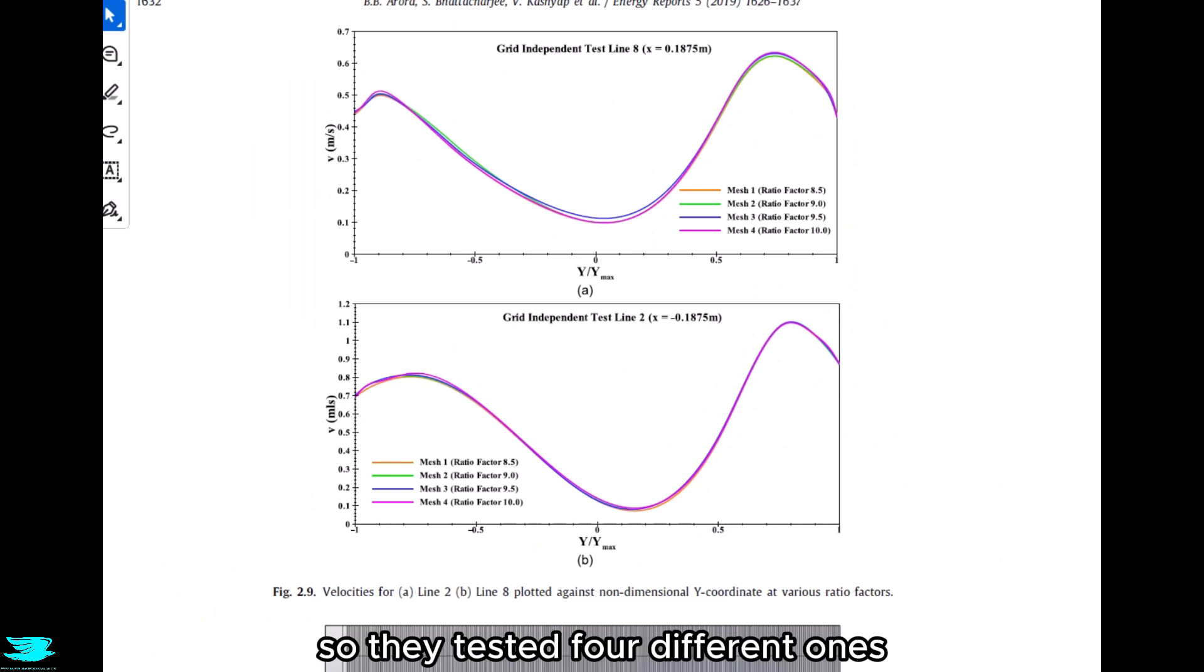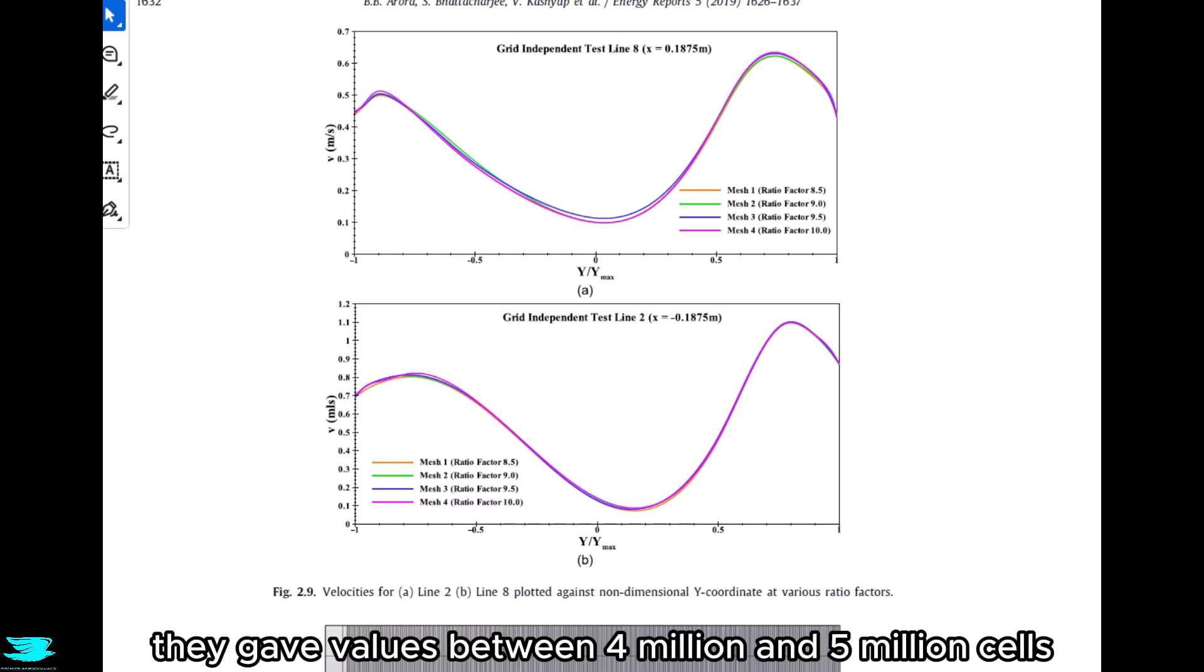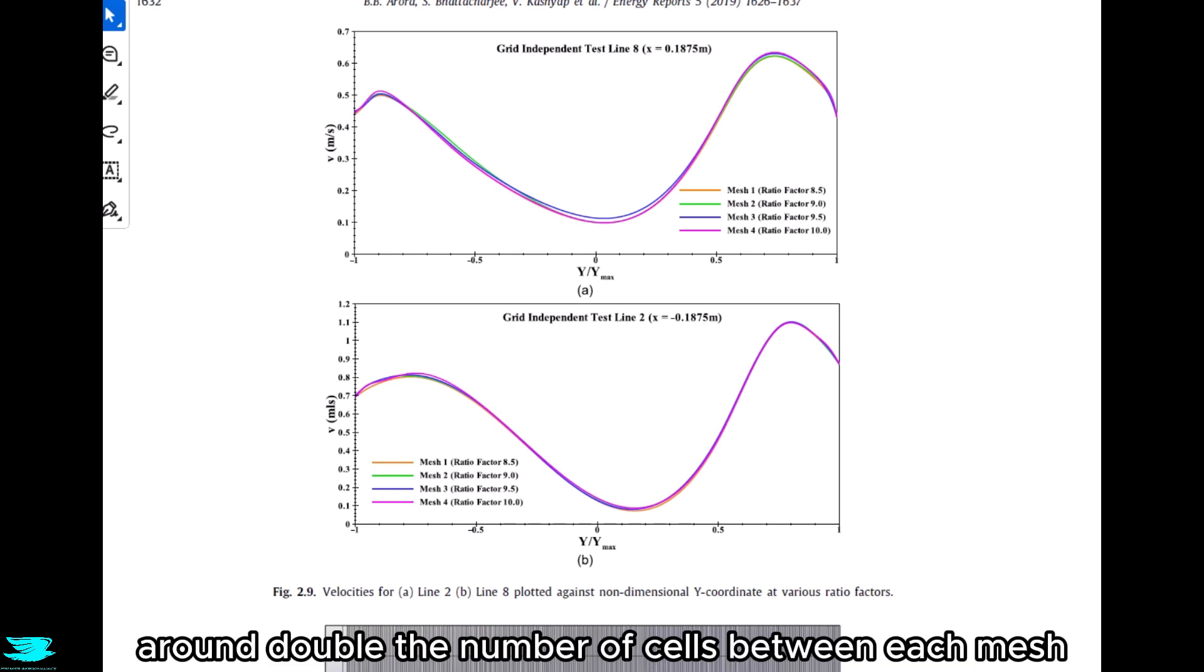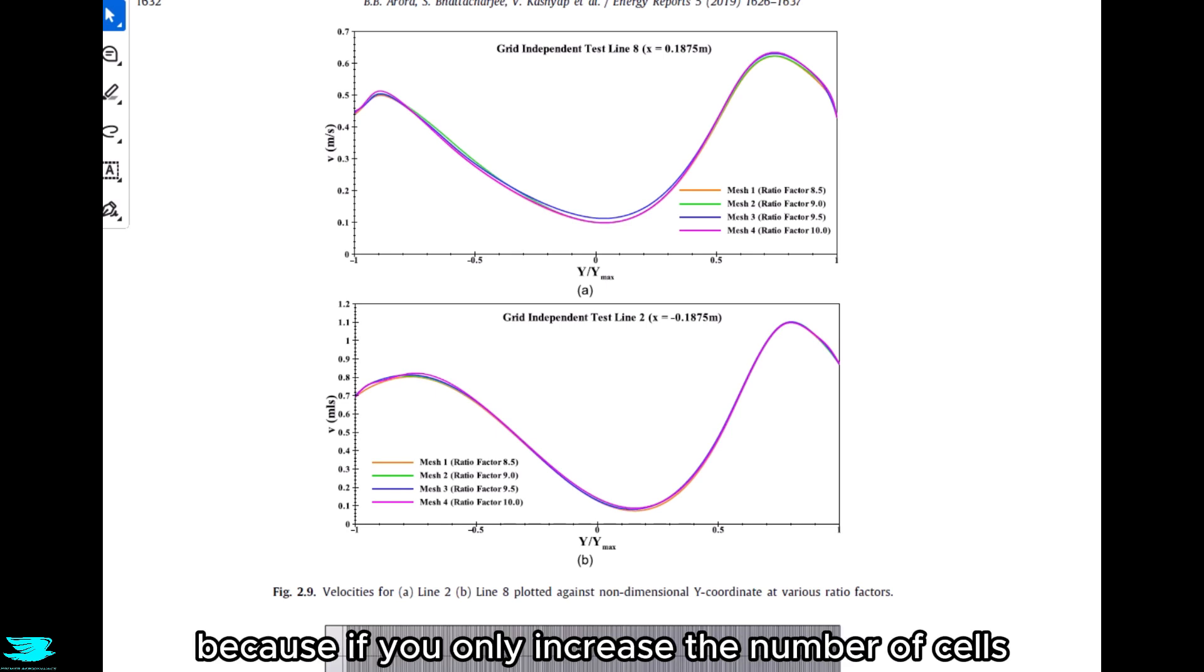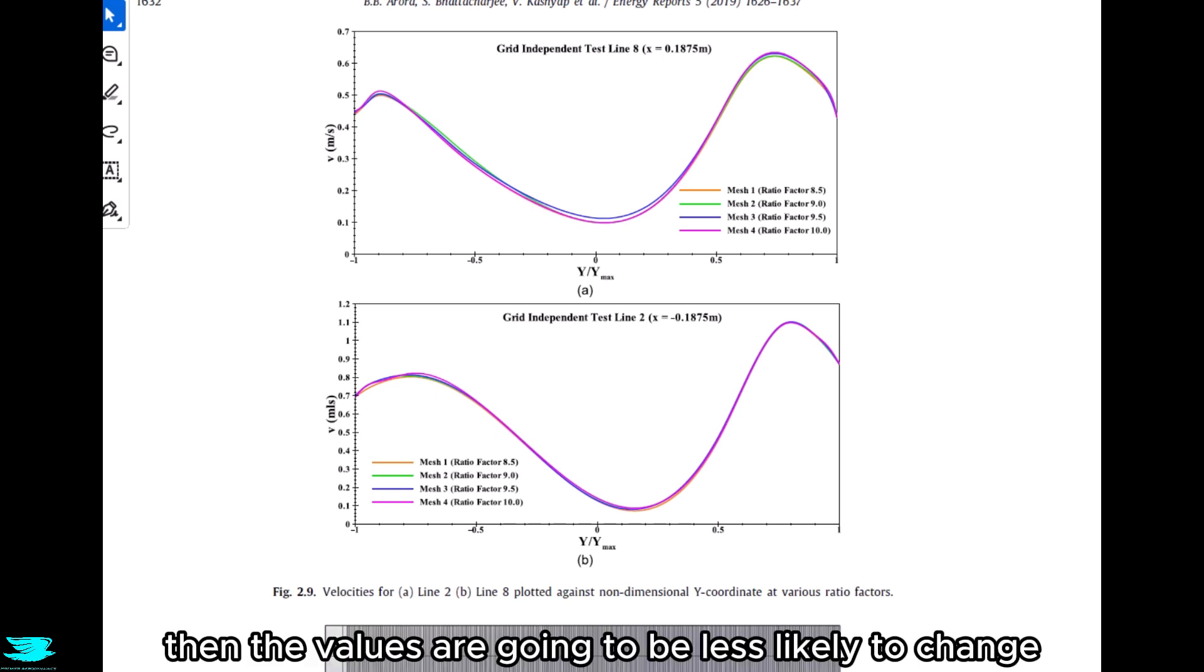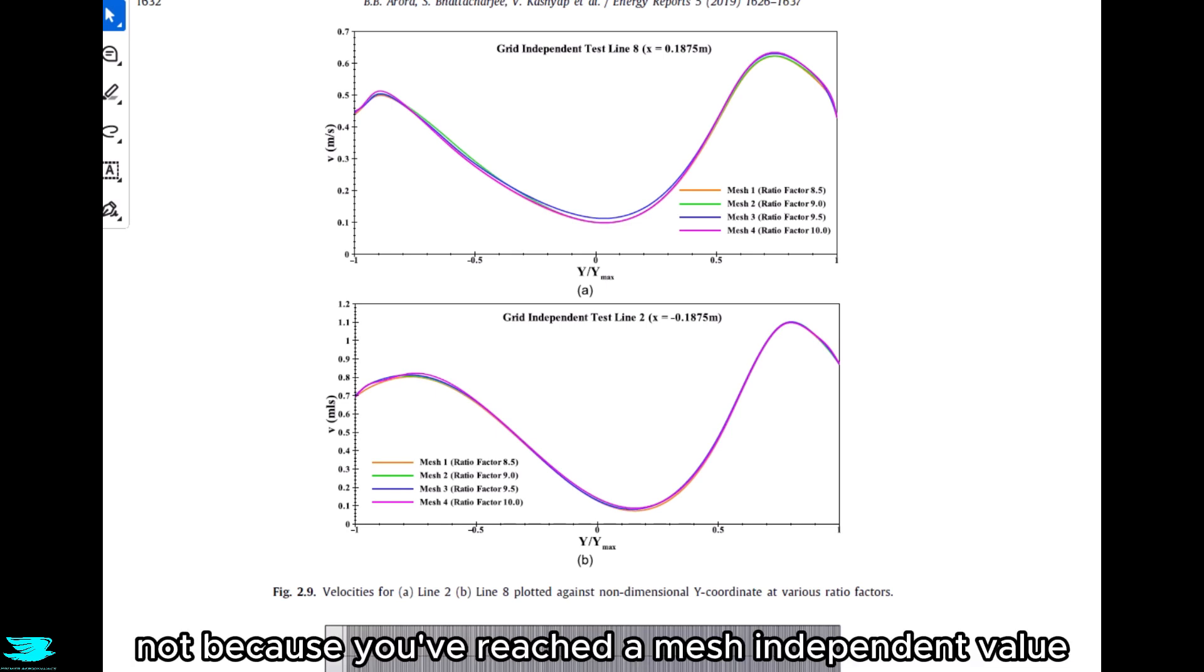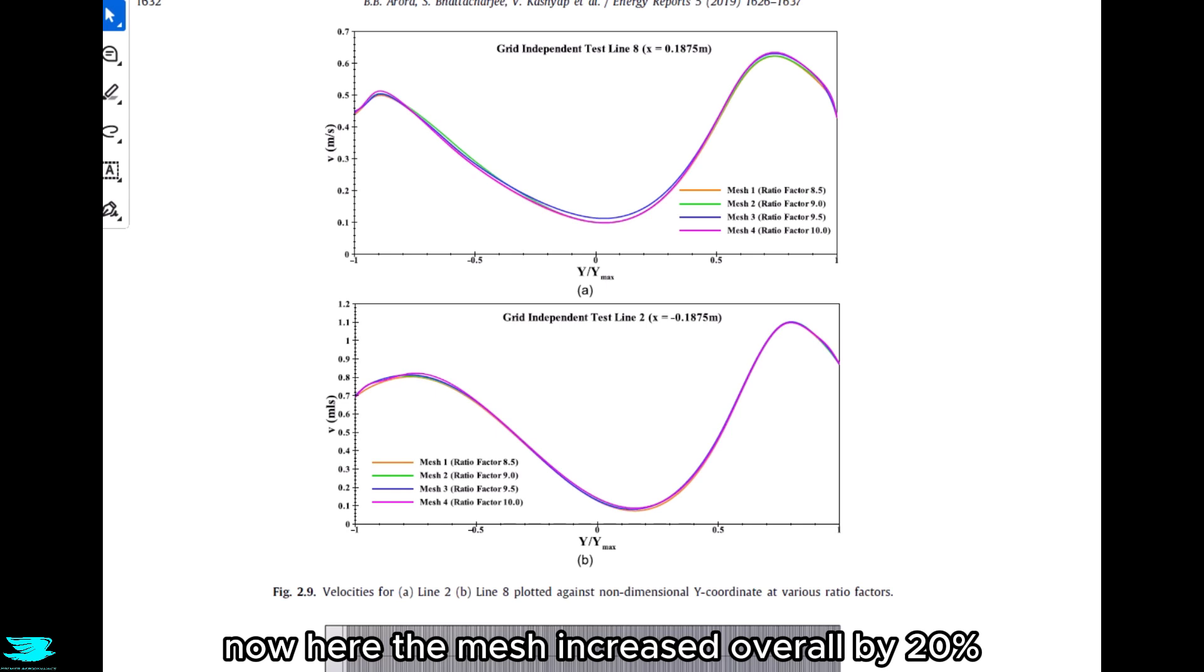And that brings us to the mesh used. They tested four different ones: mesh 1, mesh 2, mesh 3, mesh 4. They gave values between 4 million and 5 million cells for these different meshes. Honestly, that's probably not as much of a span as needed. Usually, you try to get around double the number of cells between each mesh refinement level. The reason is because if you only increase the number of cells you use a little bit each time, then the values are going to be less likely to change simply because the meshes are similar, not because you've reached a mesh-independent value now. Here, the mesh increased overall by 20% between the coarsest mesh, so mesh 1, and the finest mesh, mesh 4.